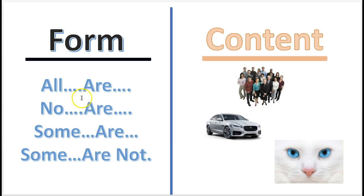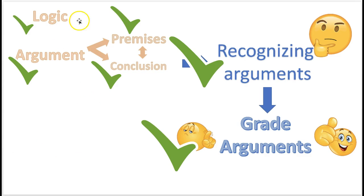These fallacies can be found in the form or the content. The form is how the argument is constructed — is it constructed in a valid way? Or is it found in the content, the information contained in the argument? Now let's take a quick recap. What is logic? It's the science used to evaluate arguments, and an argument is when somebody is trying to prove a point. Arguments contain premises, which is evidence that leads to the point the person is trying to prove, and the conclusion is the point the person is trying to prove.